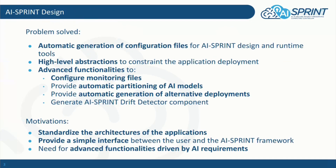The AI Sprint design tool provides a set of important functionalities for the automatic generation of configuration files for both the AI Sprint design runtime tools and for the automatic design of application components. It consists of high level abstractions to provide quality of service constraints to drive the application deployment, and furthermore it provides advanced functionalities to configure monitoring files to be used by the AI Sprint monitoring subsystem, to provide automatic partitioning of neural network based models, and to provide the automatic generation of alternative deployments with degraded performance.